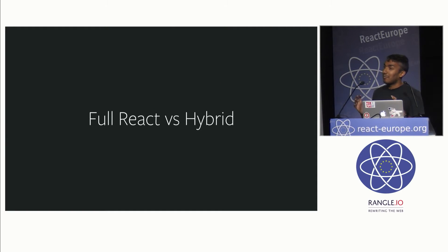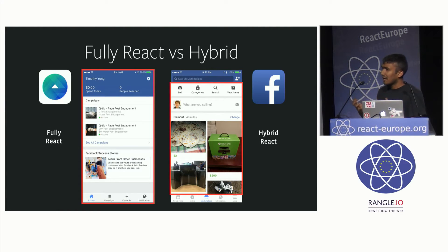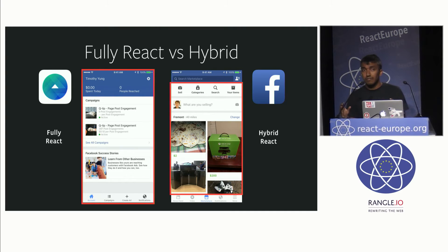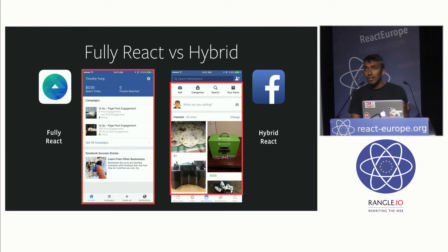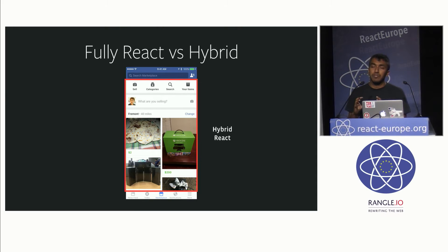Let's talk about fully React Native apps versus hybrid apps. This distinction is important when you're considering integrating apps. On the left we have Ads Manager — that's what we call a fully React Native app. All of it is built in React Native, even the tab bar and navigation. On the other hand, the Facebook app is a hybrid React Native app — the tab bar and search bar aren't in React Native, but the main content, like the Marketplace screen, is all built in React Native. For this talk, we're thinking about hybrid React Native apps, where you integrate React Native into an already successful app.